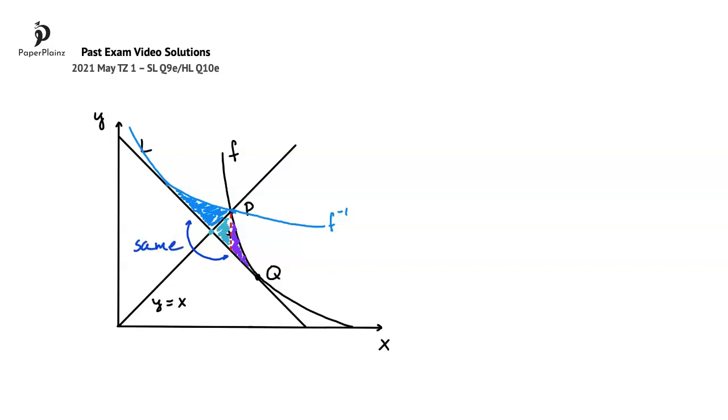So as our answer, we can write that due to the symmetry in the diagram, the total shaded area is 2 times 1.52, so 2 times our answer from the previous question part, for a total of 3.04.